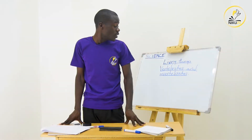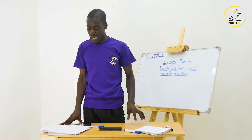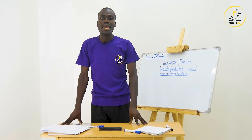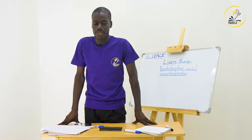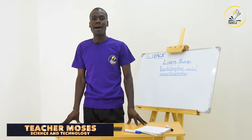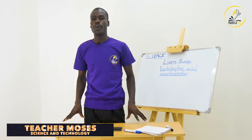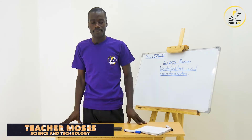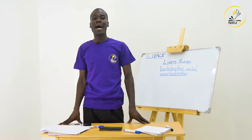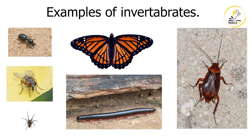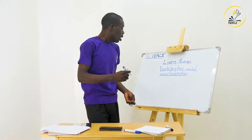Now let us look at invertebrates. Invertebrates are small animals that do not have a backbone — they do not have a bone where the ribs are joined. They are very tiny. Examples include the ant, housefly, cockroaches, spider, millipede, and centipede. You can name the rest — those are what we refer to as invertebrates.